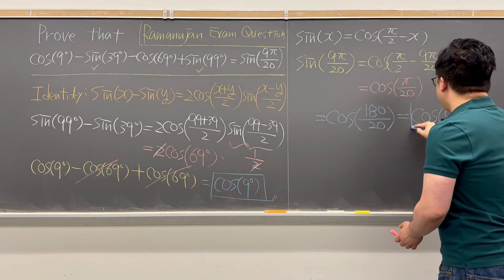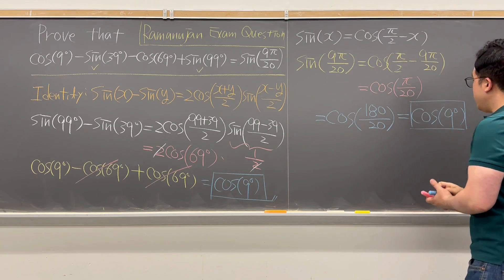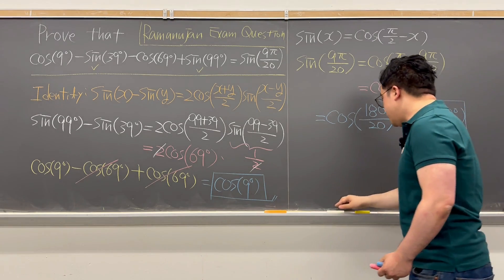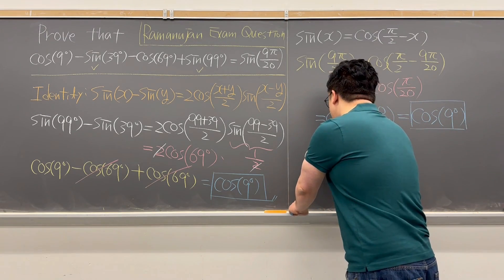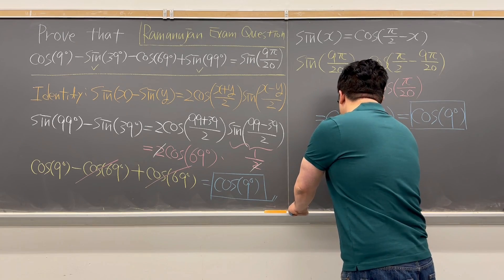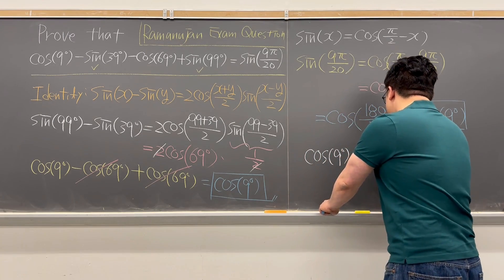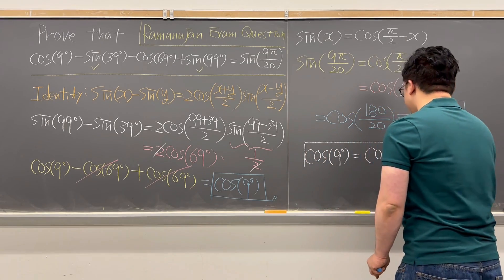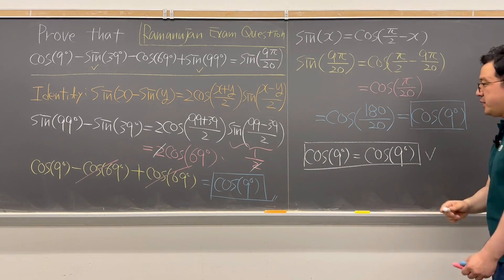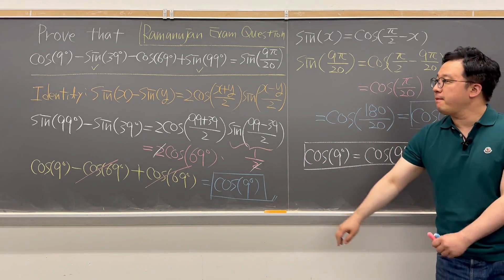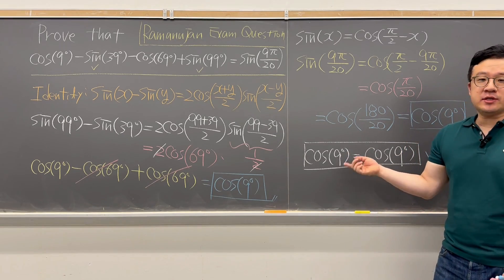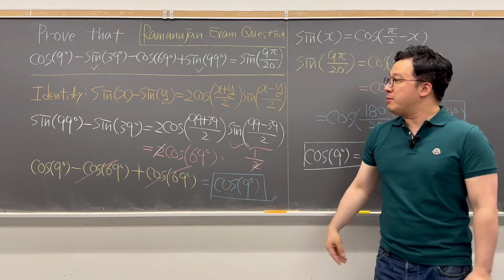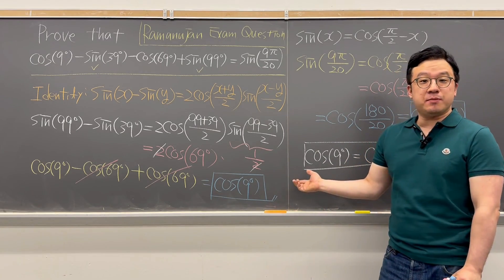So both the left-hand side and the right-hand side equal cosine 9°, and we've proved it. The left-hand side was cosine 9° and the right-hand side was also cosine 9°, so the proof is complete. Pretty interesting question that Ramanujan actually solved on the exam when he was in college. I'll be back with more questions like this soon.